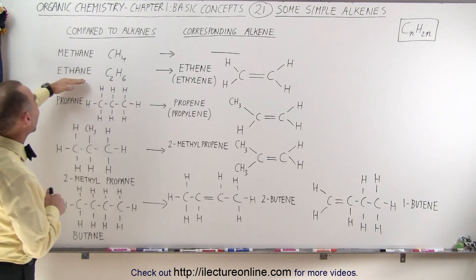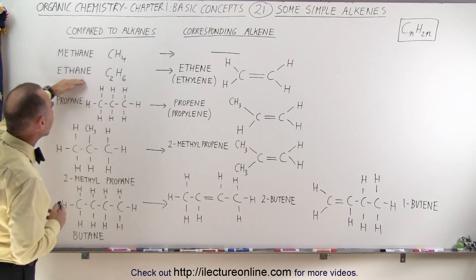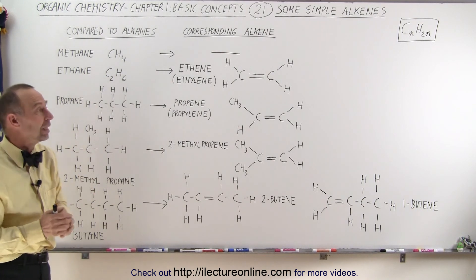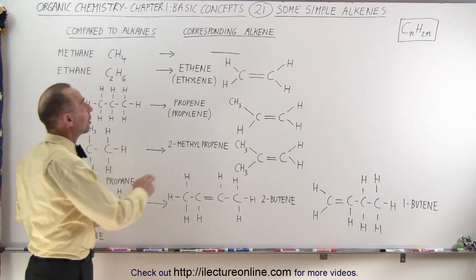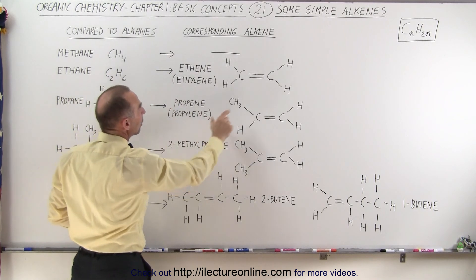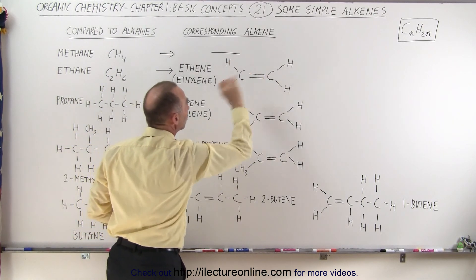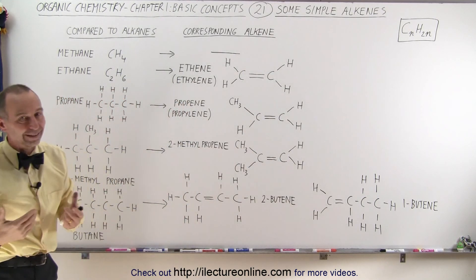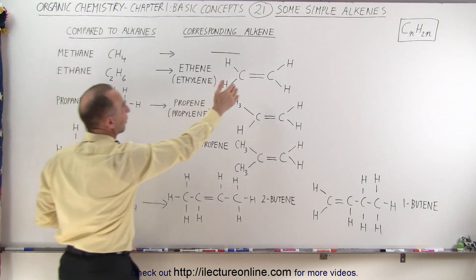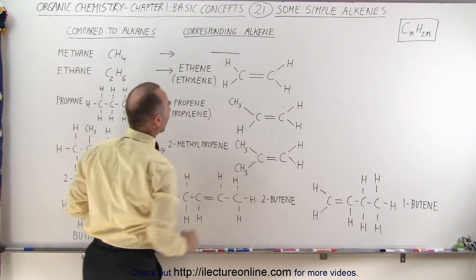The next one is ethane, the simple molecule ethane, part of alkanes with formula C2H6. It does have a corresponding alkene, but we call it ethene instead of ethane — or ethylene, the common name. Notice the double bond between the two carbons; each carbon only has two hydrogens instead of three because one of the available electrons is taken up in the double bond.